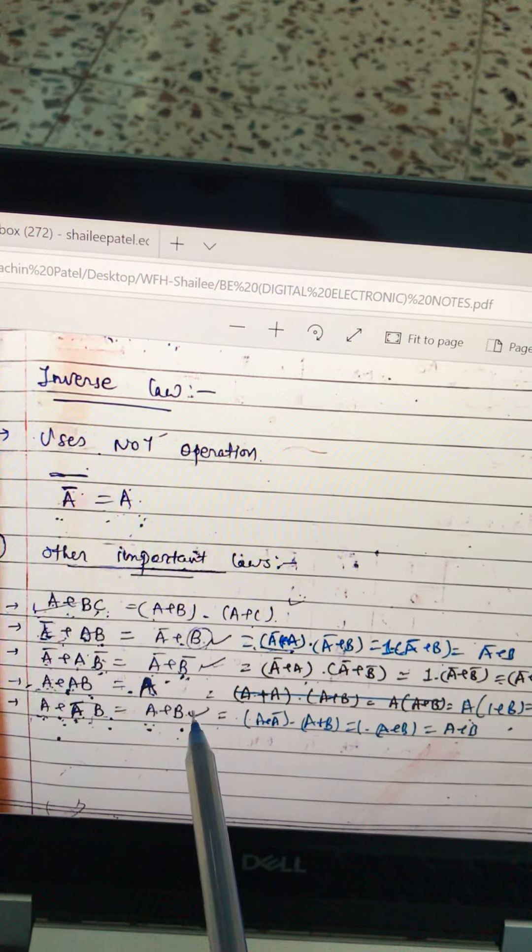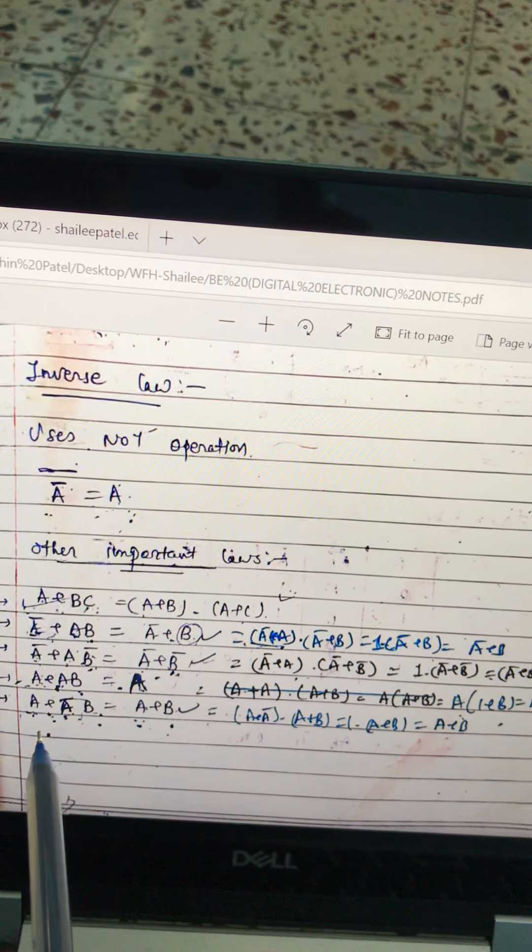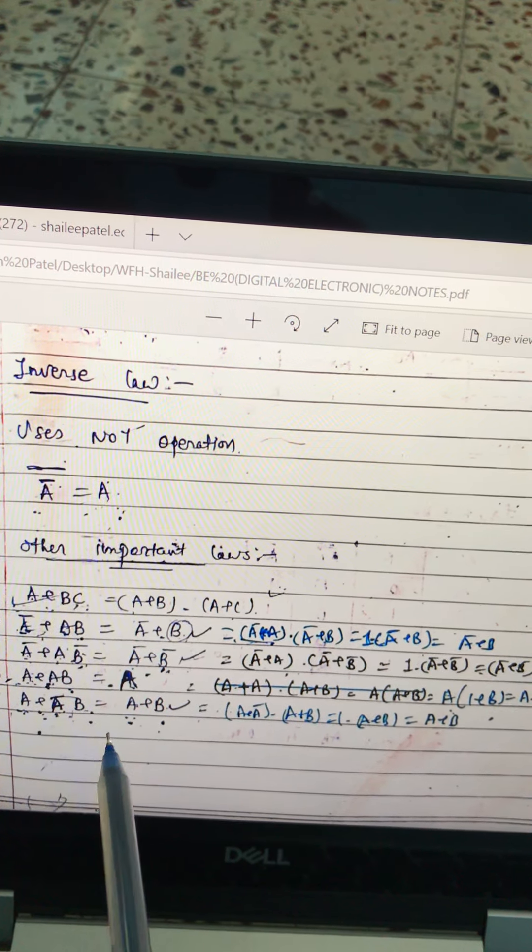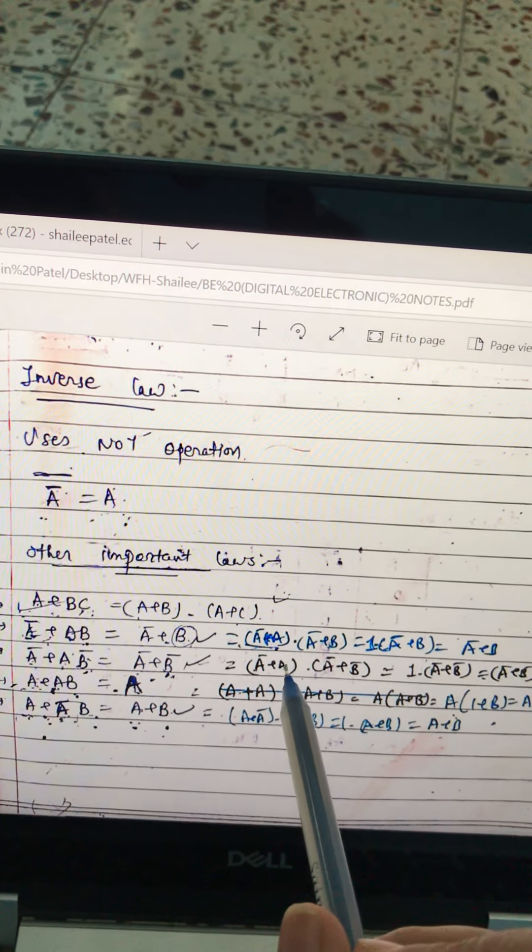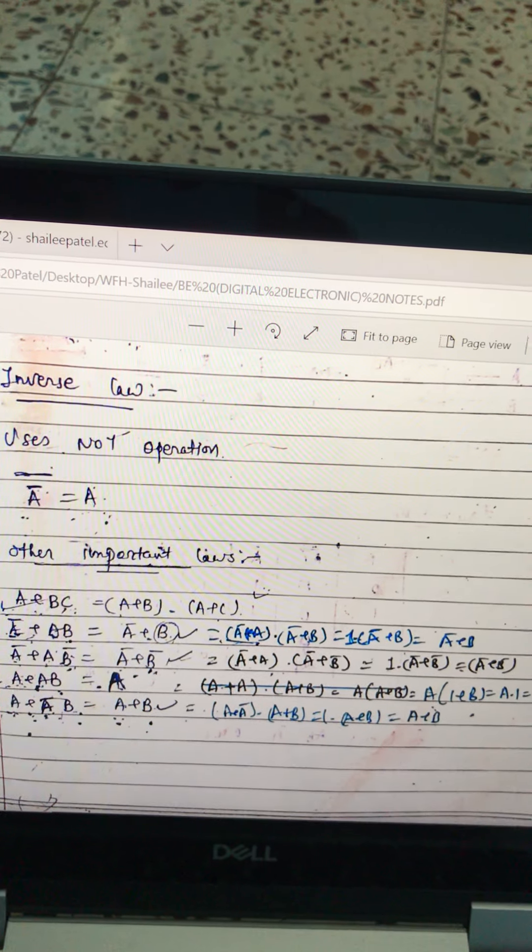So A plus AB equals A. And last but not the least is A plus A bar B. Let's open the bracket again. Procedure the same you followed. You will get A plus B.